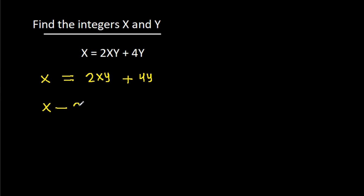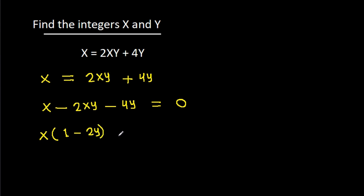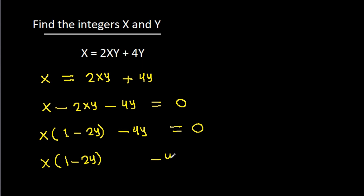Rearranging, we get x minus 2xy minus 4y is equal to 0. Here we can take x common, and it will be x times (1 minus 2y) minus 4y equals 0.